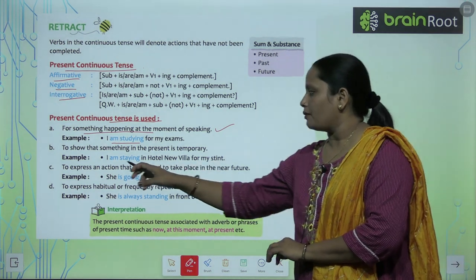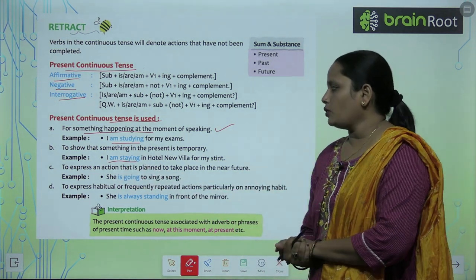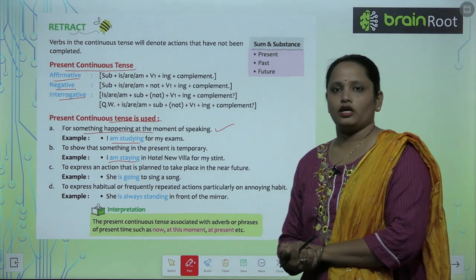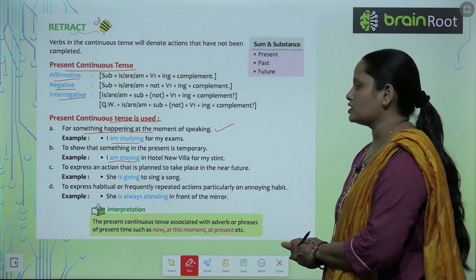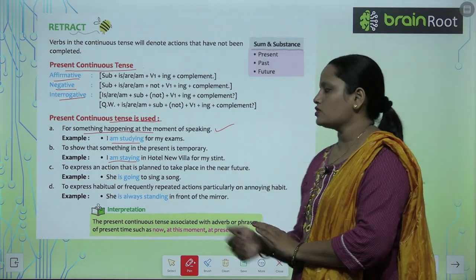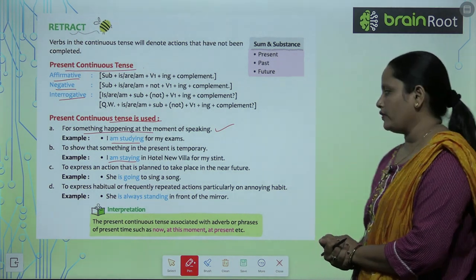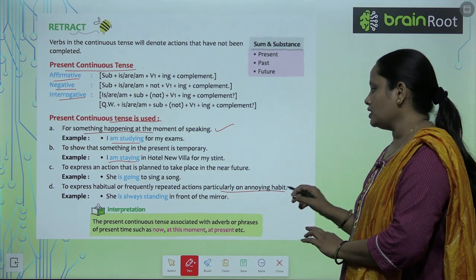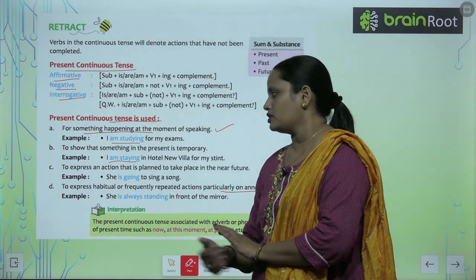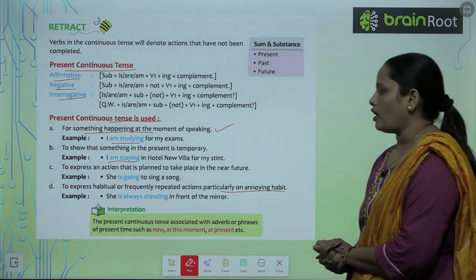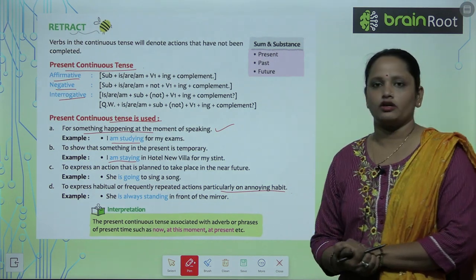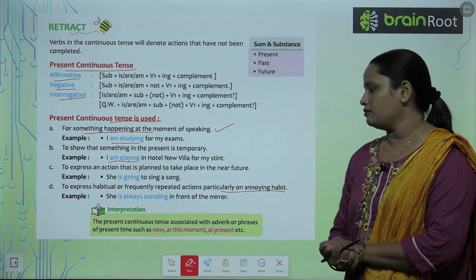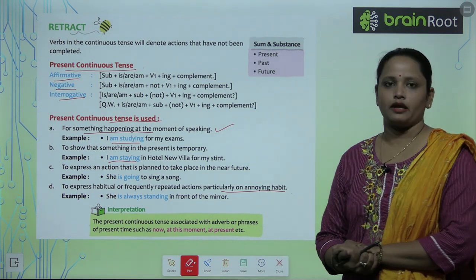Third, to express an action that is planned to take place in the near future — for example, 'She is going to sing a song.' Fourth, to express habitual or frequently repeated actions, particularly annoying habits — for example, 'She is always standing in front of the mirror.' Present Continuous Tense is associated with adverbs or phrases of present time such as now, at the moment, at present, etc.